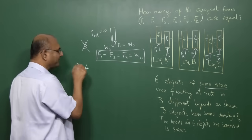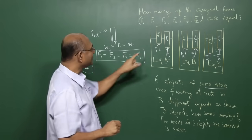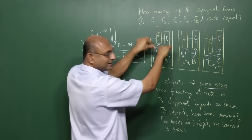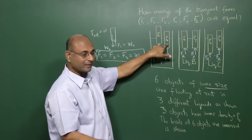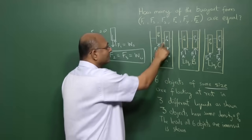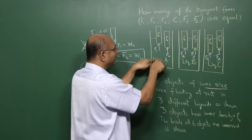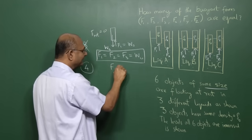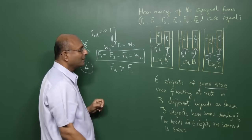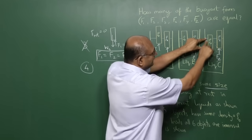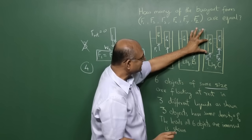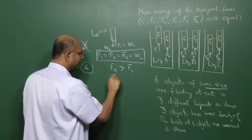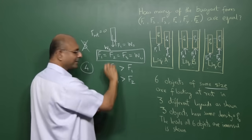But then why is the answer 4 correct? Let us see. You already saw that three of these forces are equal. Now here the amount of the object dipped in is clearly more, and if it is more, the volume of the liquid displaced is more, but it is the same liquid for both of these. So clearly buoyant force Fx is more than F1. Looking at the other case, this is dipped in more than that fellow, and since this is dipped in more, the buoyant force F3 must be more than Fz. So F3 must be more than Fz. These two are clearly not equal.